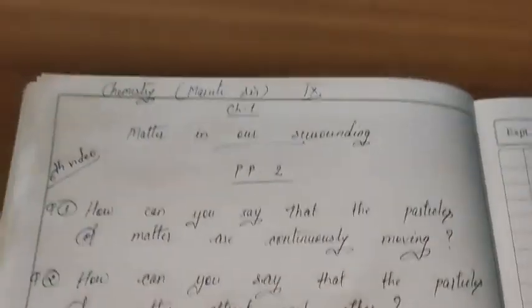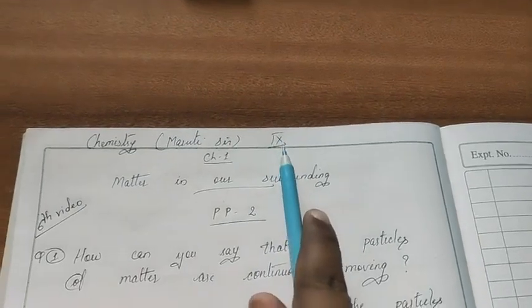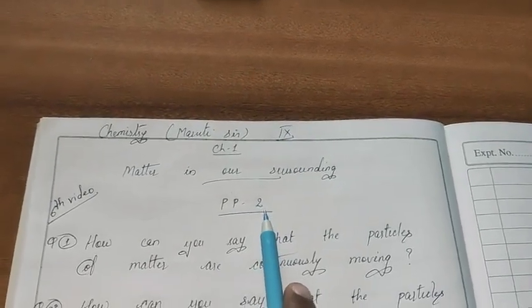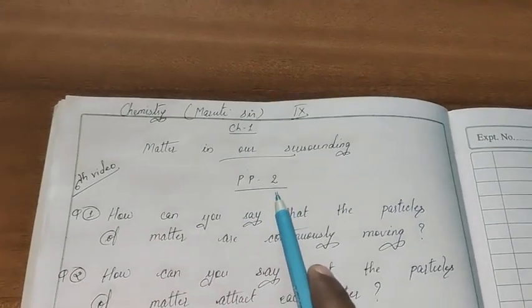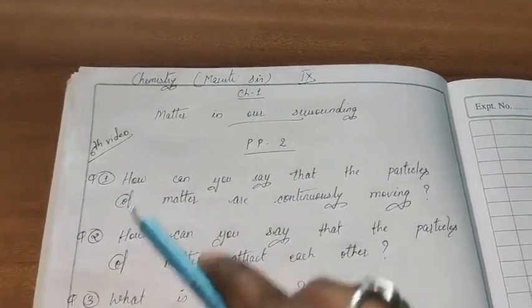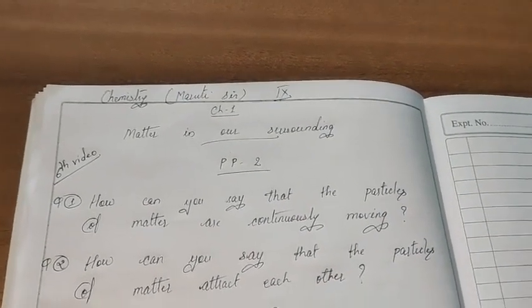Welcome students. This is the sixth video based on the first chapter of chemistry for class 9 and this is the second practice paper based on the same chapter also. In this practice paper I have given you five questions.